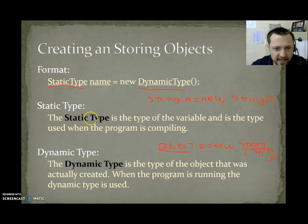So, here we have a static type of object and a dynamic type of string. The static type is the type of the variable and it is the type used when the program is compiling. The dynamic type is the type of the object that was actually created. When the program is running, the dynamic type is used.